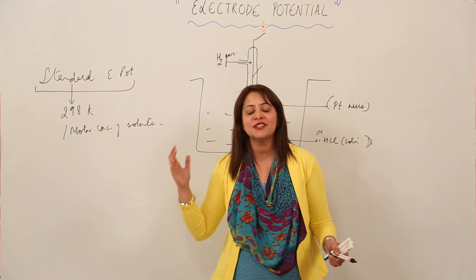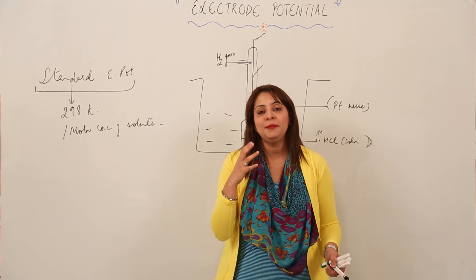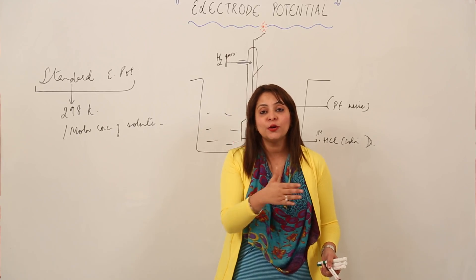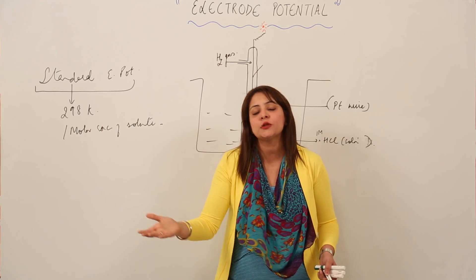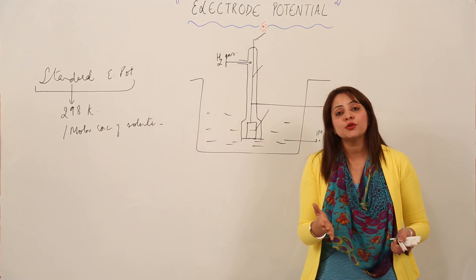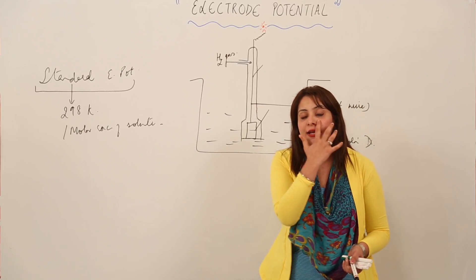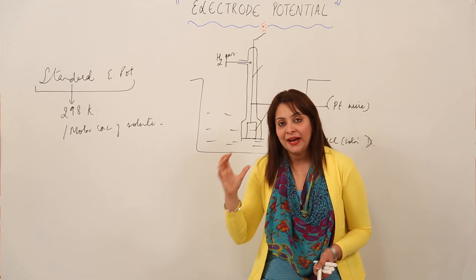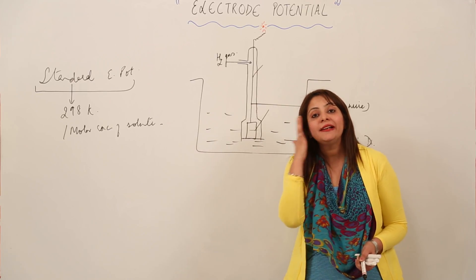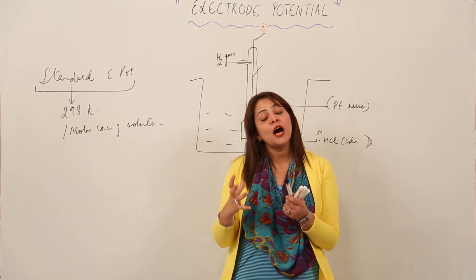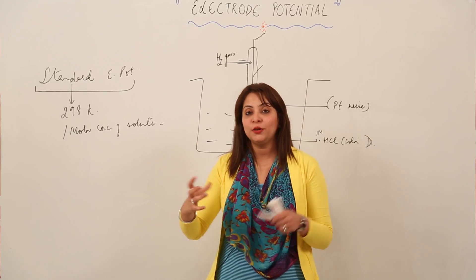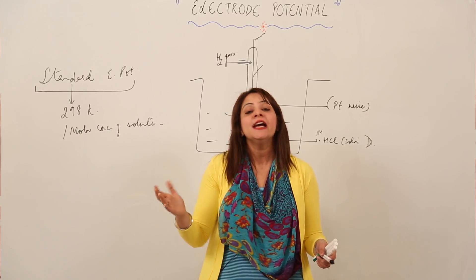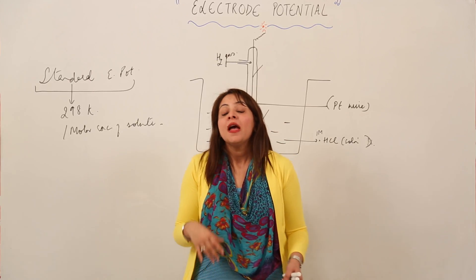It is not compulsory that if one electrode acts as a cathode in one example, it will act as a cathode in all cases. An electrode may act as a cathode in one case and as an anode in another, which creates confusion. To resolve this, we need to know the electrode potential value — once we know it, we can clearly decide whether it will act as an anode or cathode.